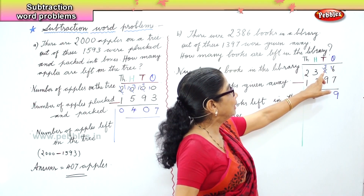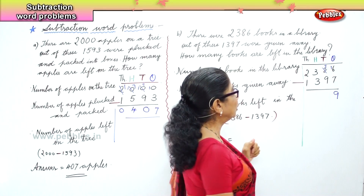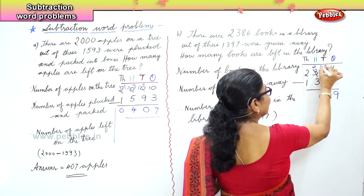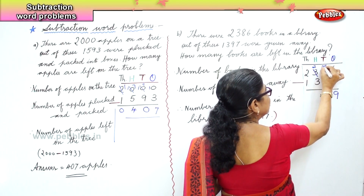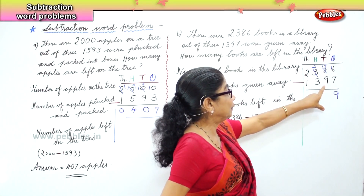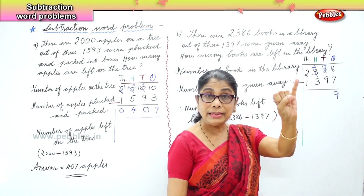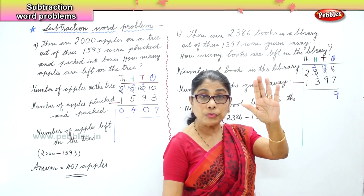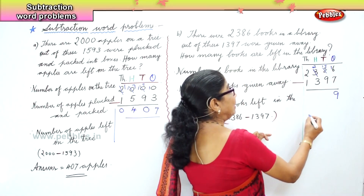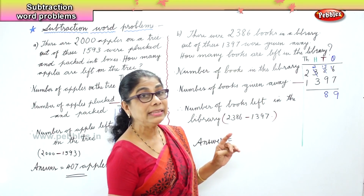Now in the tens place we have 7 tens take away 9. Nine is bigger, so we borrow 1 from the hundreds and bring it over to the tens place. We have 17 take away 9. After 9 count 10, 11, 12, 13, 14, 15, 16, 17 — that is 8. So 17 take away 9 is 8.